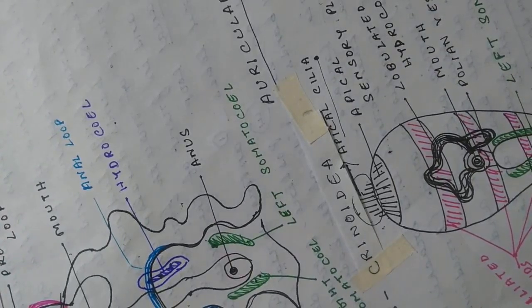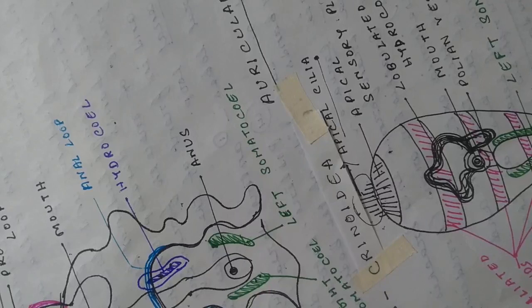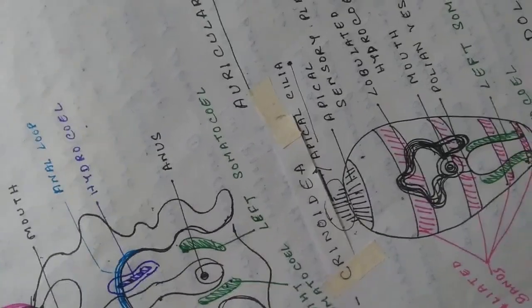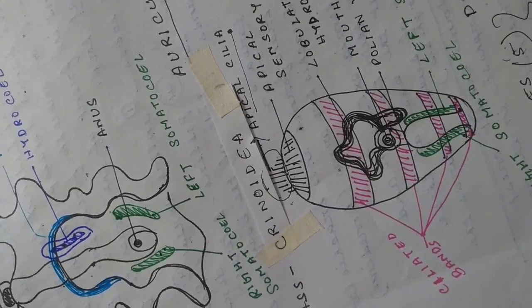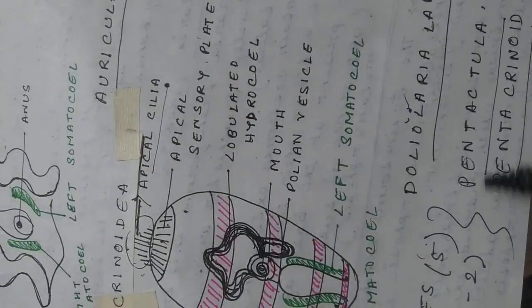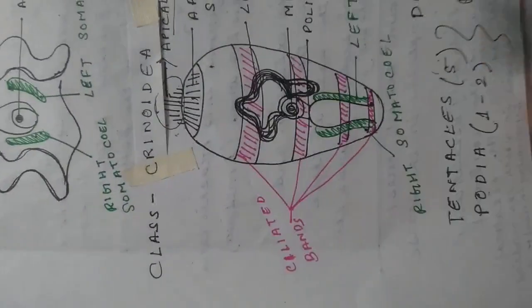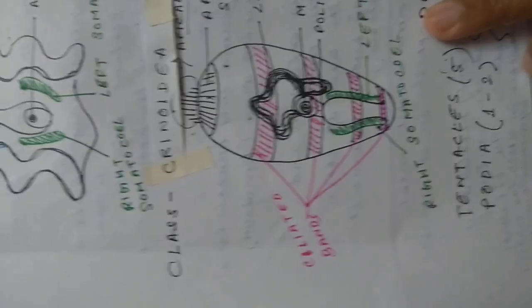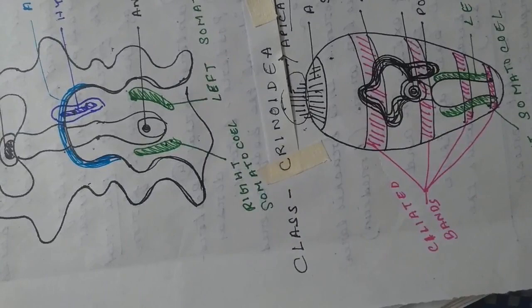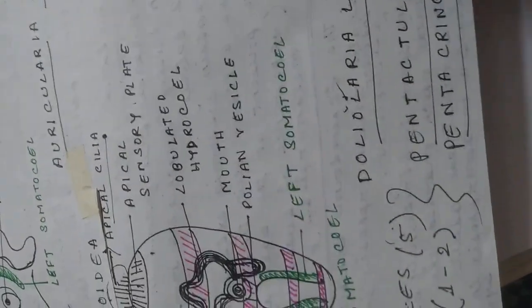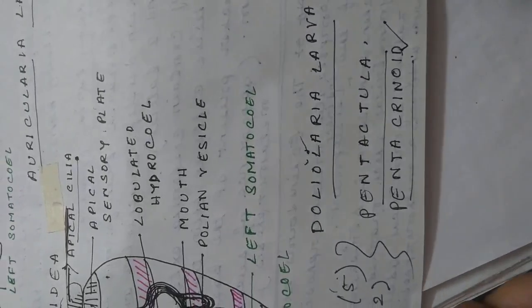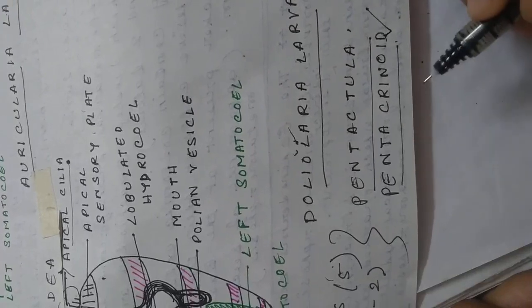The metamorphosis is gradual: the larva gradually acquires five tentacles and one to two functional podia — the locomotory organs or feet. As they acquire five tentacles they are also known as pentactula. In the case of Crinoidea, the doliolaria larva forms a stalk and is referred to as the pentacrinoid larva. This pentacrinoid larva then metamorphoses into the adult.